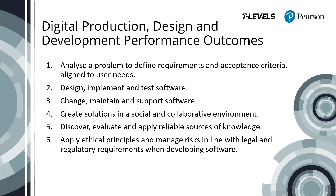The Digital Production Design and Development occupational specialism has six performance outcomes, or POs for short. In the specification there are eight knowledge or skill statements your students must achieve. In the main these are identical to the performance outcomes shown here, except for PO2, which in the specification has been split into three: design, implement a solution using at least two appropriate languages, and test a software solution. Each performance outcome is broken down into several skill statements — these are what your students are expected to be able to do or demonstrate.